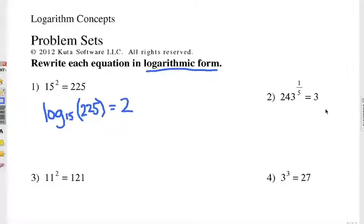On this one, here's the base. We're going to say log base 243 of 3. 243 to the what power is 3? Base, value, exponent. 243 to the one-fifth power is 3. Take a look at these next two and see if you can write them in logarithmic form.